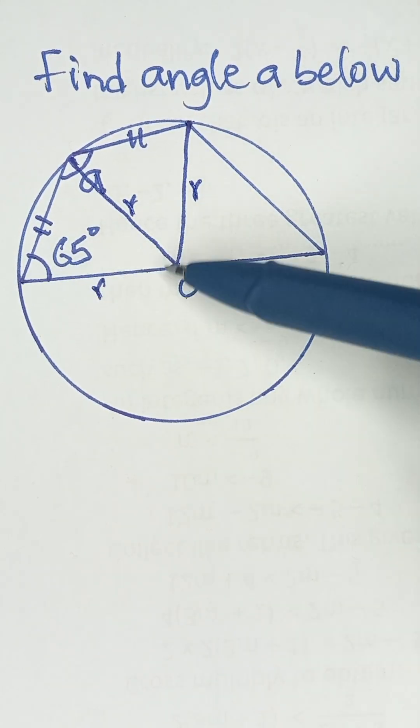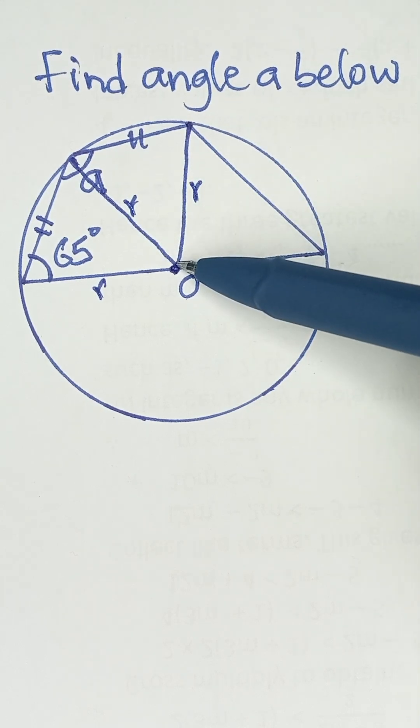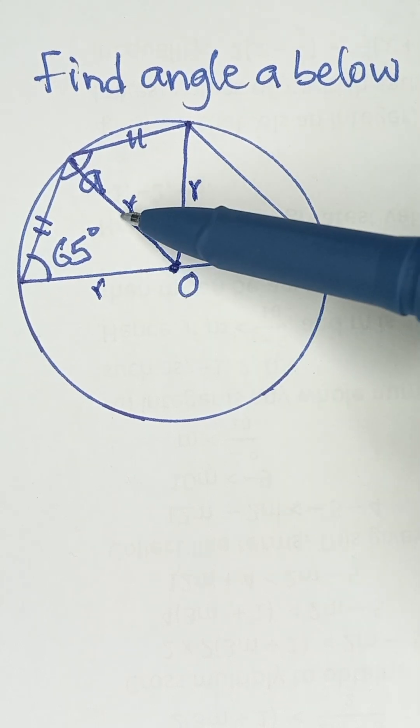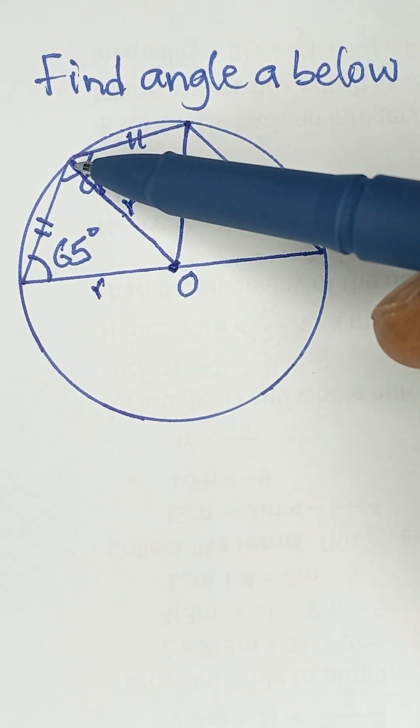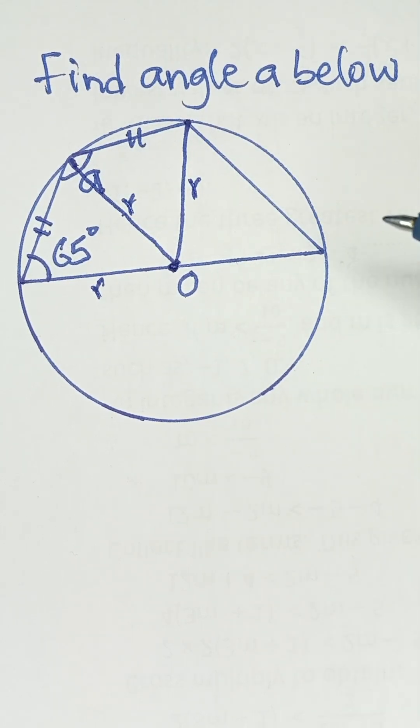So that means this triangle is an isosceles triangle because the two sides are equal. So these two sides are equal. So that means this triangle is an isosceles triangle. And in an isosceles triangle, the base angles are equal.